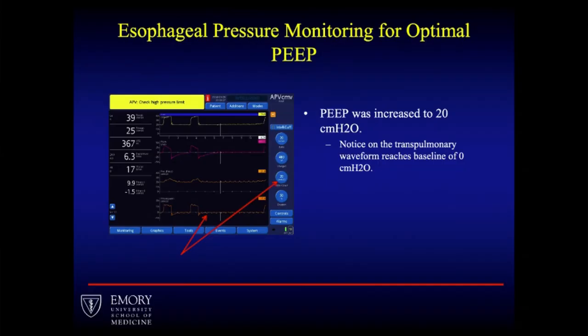Please note — looking at the after photo — the change in PEEP relative to the change in transpulmonary pressure is not linear. PEEP was at 12 with a negative 4.2 number. Now PEEP is at 20 and the waveform is at essentially zero. So don't think: my number is negative 4, I can raise PEEP by 4 and things will equalize. You need to look at your waveform and make everything match up.